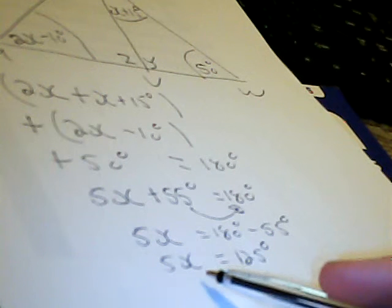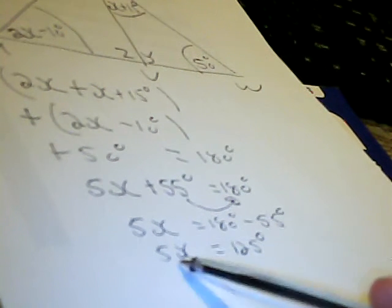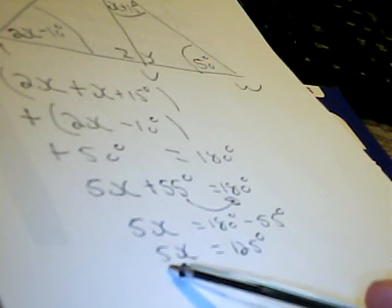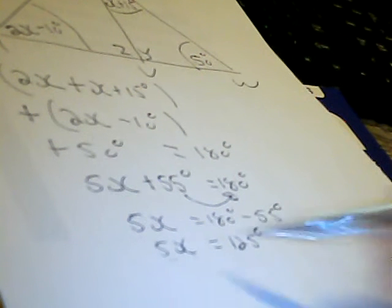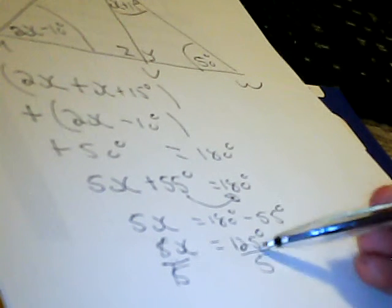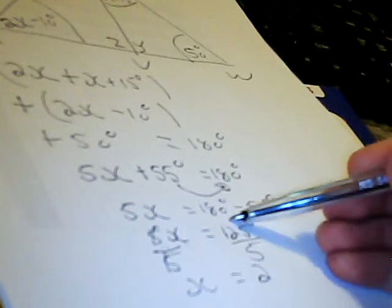But our strategy is we only want X. We don't want 5X. The coefficient in front of the variable means we are multiplying. To get rid of it we need to do the opposite of multiply which is divide. The opposite of what we do on one side we have to do on the other side. So we also have to divide by 5. So we have X and 125 divided by 5. 5 goes into 12, 2 times. We have a remainder of 2. 5 goes into 25, 5 times. So X equals 25 degrees.